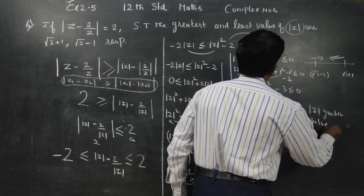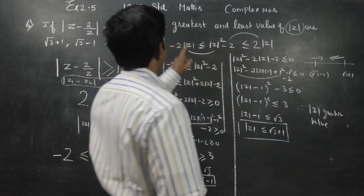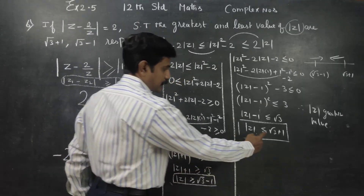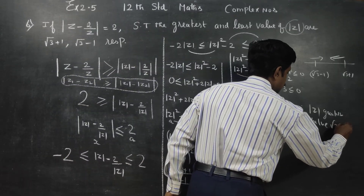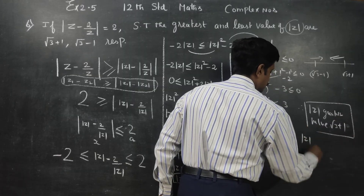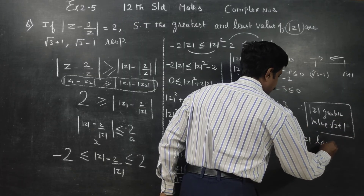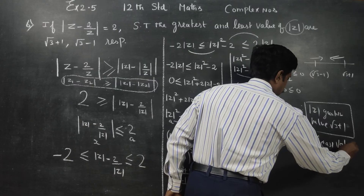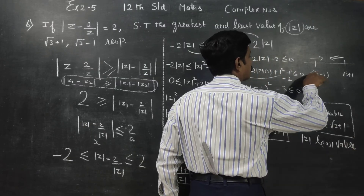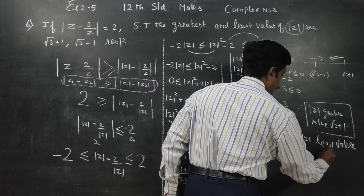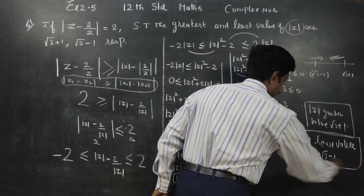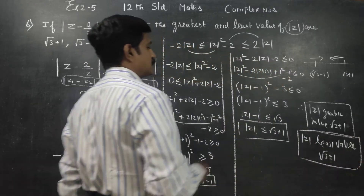Therefore the greatest value of modulus of z is root 3 plus 1, and the least value of modulus of z is root 3 minus 1. This is the first answer from case 1 and the second answer from case 2.